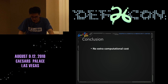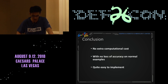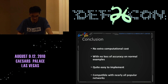In conclusion, our method doesn't introduce extra computational cost, it can largely improve robustness with no loss of accuracy on normal examples, it is quite easy to implement with only a few lines of code, and it is compatible with nearly all popular networks.